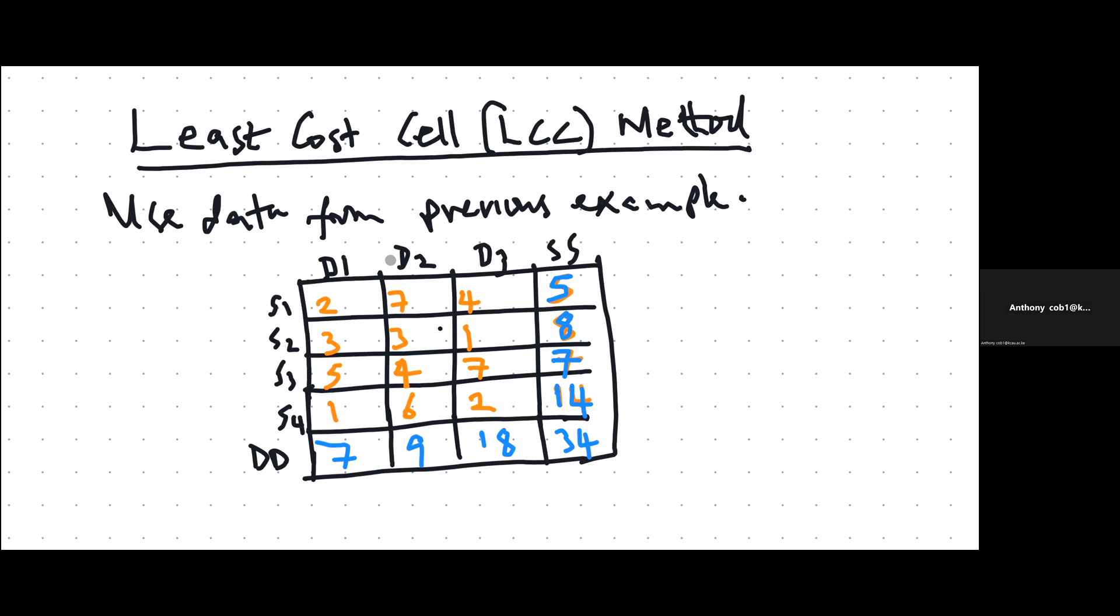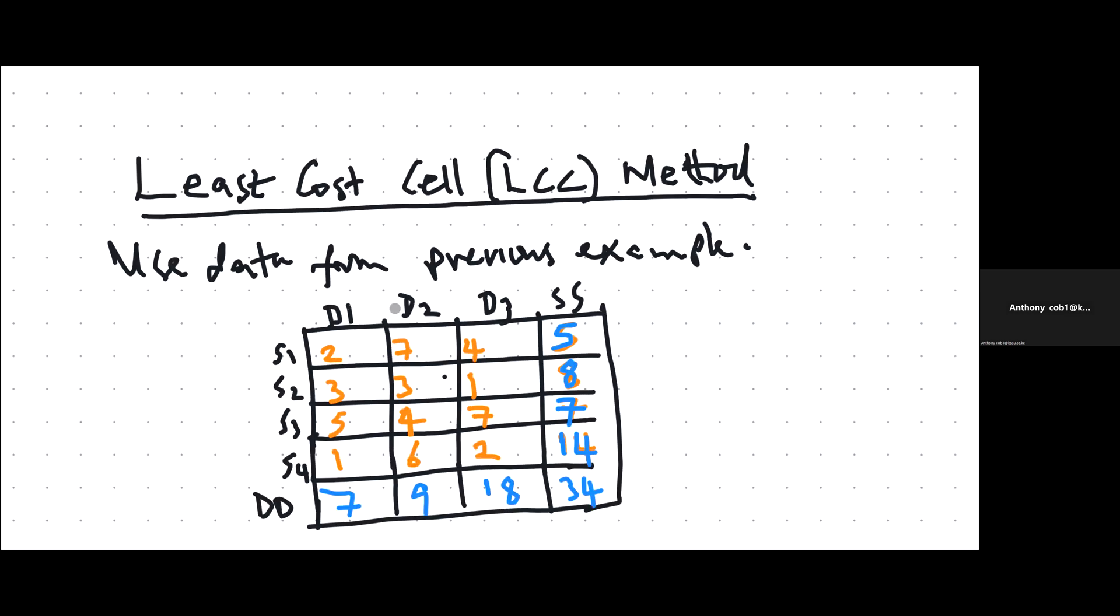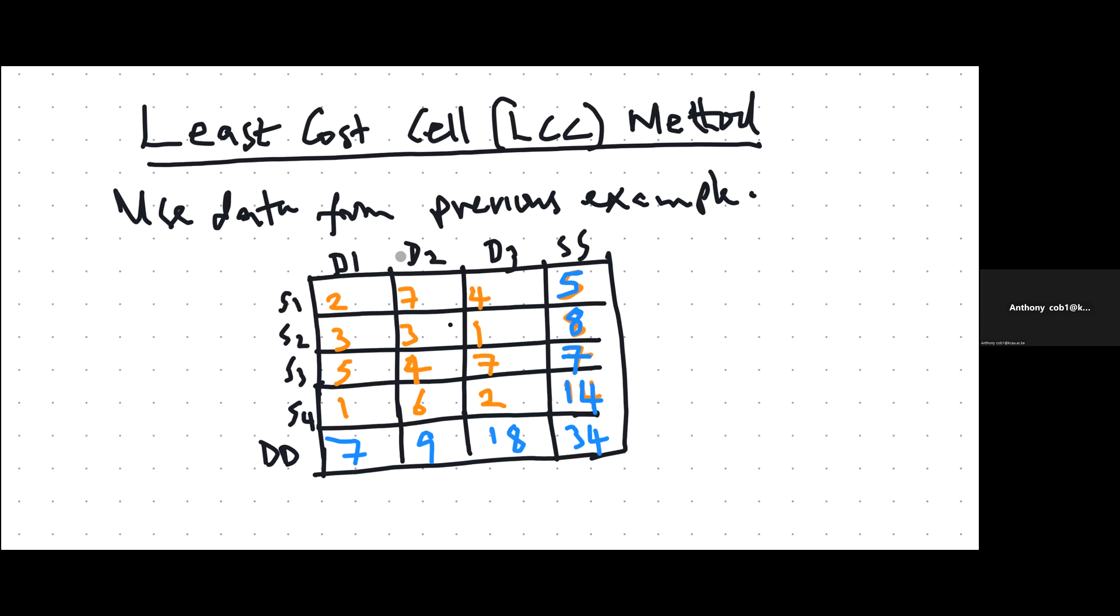Now let's look at the least cost cell method of solving a transportation problem. You're going to use the data that was used in our previous illustration, where we have four sources and three destinations. The row totals and column totals are given, and this is a balanced transportation problem. The difference among the methods comes in how we decide the cell to allocate first.